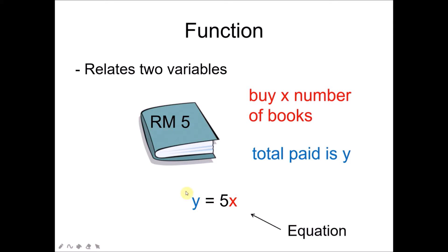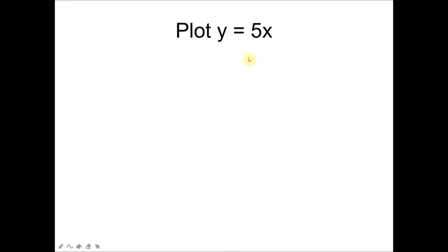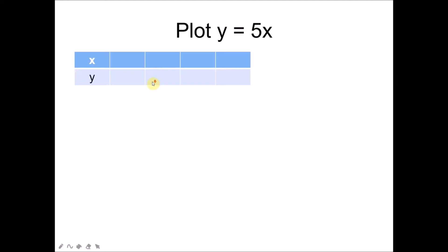Now, if I take this equation and try to plot the graph of Y equals to 5X, first I need to construct a table of values of X and Y. Values of X, I can use any numbers I want, so I can start by using 0. When X is 0, 5 times 0 is equal to 0, hence Y equals to 0.